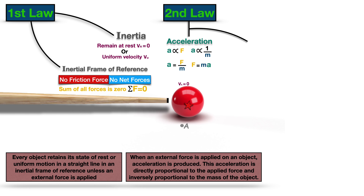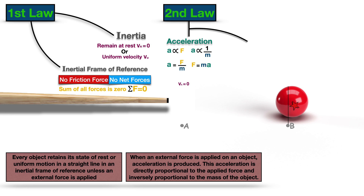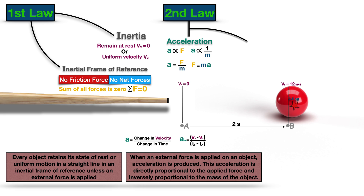Let's look at the same example. When the external force is applied to the ball, let's say that the velocity of the ball when it reached point B was 12 meters per second. As we know, acceleration is equal to change in velocity over change in time, and let's say the ball took two seconds to reach point B. So the change in velocity will be velocity at point B, which is 12 meters per second, minus velocity at point A, which is zero, and change in time will be time at point B minus time at point A. So the acceleration from point A to B will be 6 meters per second squared, and the given mass of the ball is 0.5 kg.